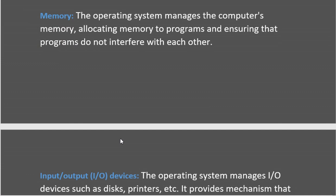Another important resource after CPU is memory. Memory is also an important resource managed by the operating system. The operating system manages the computer's memory, allocating memory to programs and ensuring that programs do not interfere with each other. This limited amount of RAM is allocated to programs in such a way that programs do not interfere with each other's memory portion.